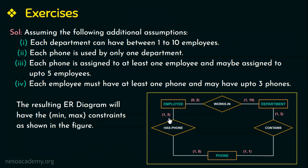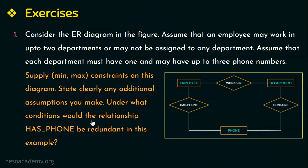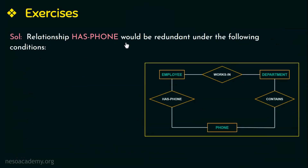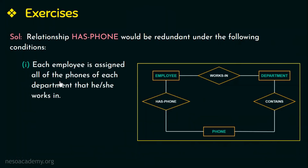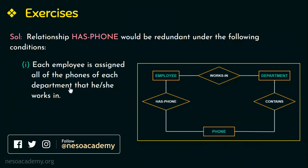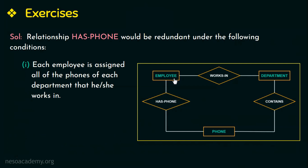The next question asked is under what conditions would the relationship has-phone be redundant in this example. The relationship has-phone would be redundant under the following conditions. The first one is when each employee is assigned all of the phones of each department that he or she works in — that is, when all employees of a particular department are assigned all the phones of that department. This relationship particularly specifies the phones assigned to each employee, but if all phones of a department are assigned to all employees working there, then this relationship will be redundant.